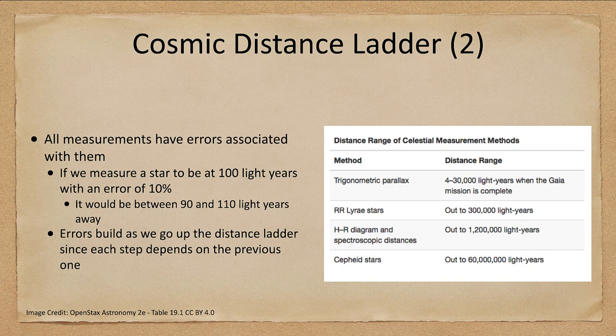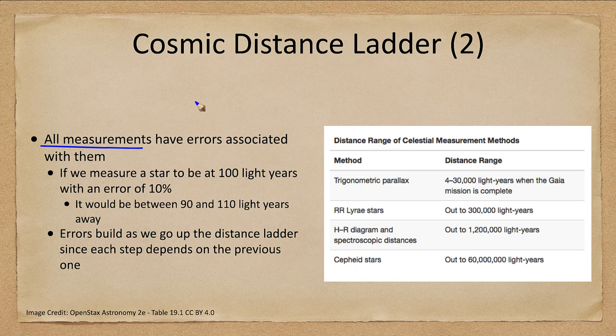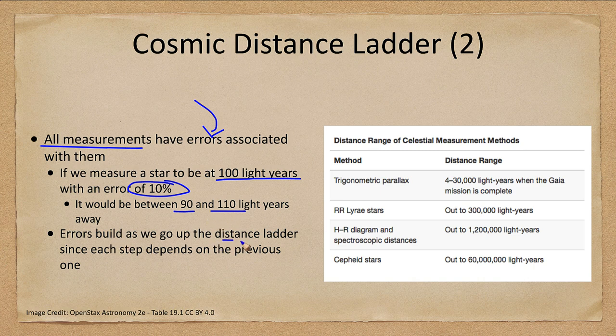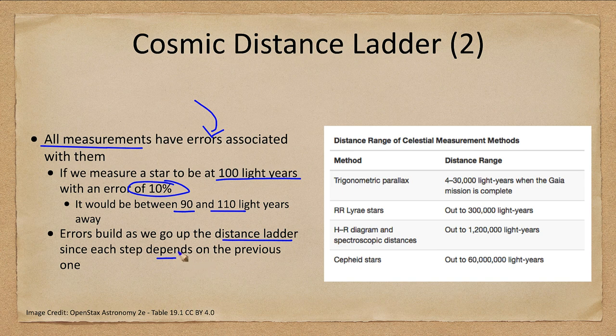All measurements have some kind of error associated with them. If we measure a star at 100 light years with an error of 10%, then we would say it is between 90 and 110 light years away. As we go up the distance ladder, each step builds on the previous step, and therefore the errors tend to increase.